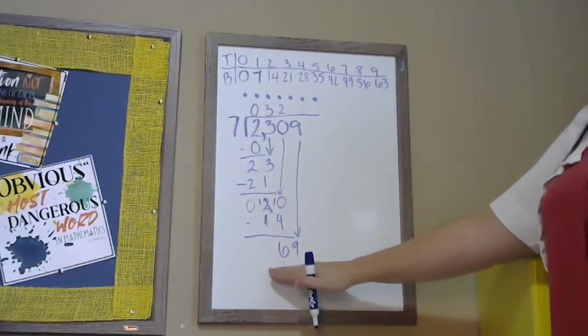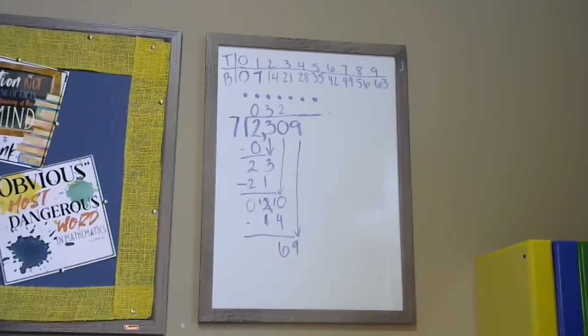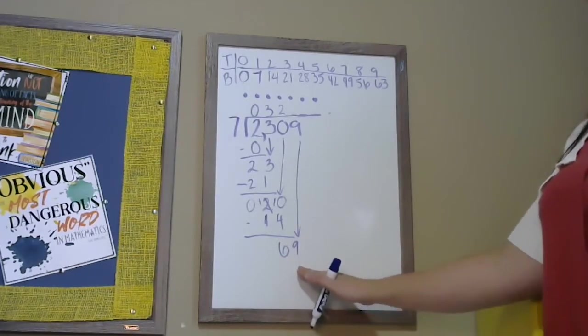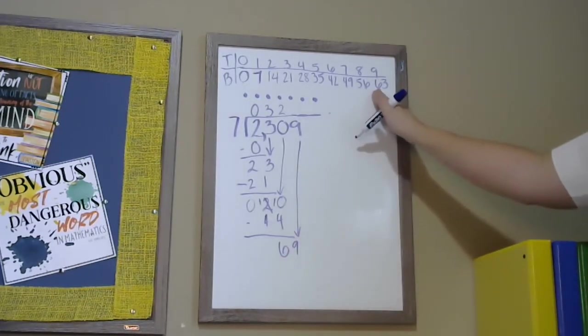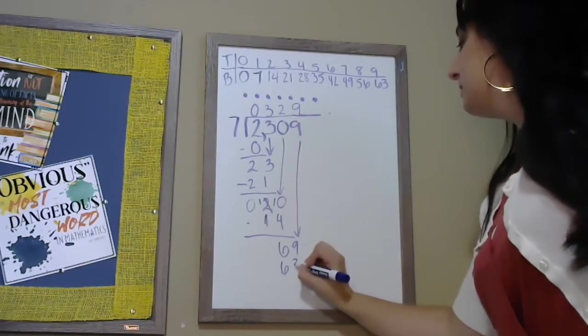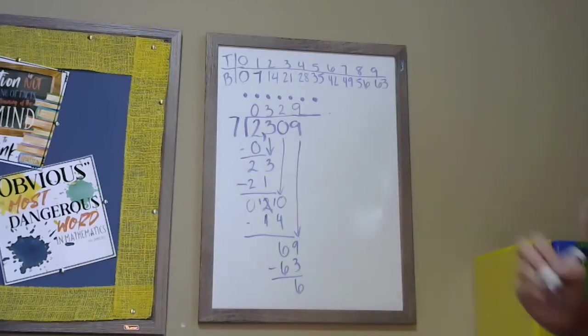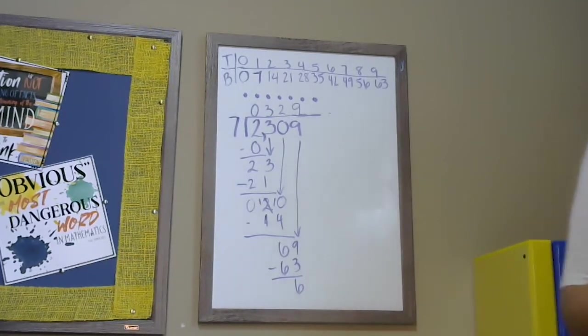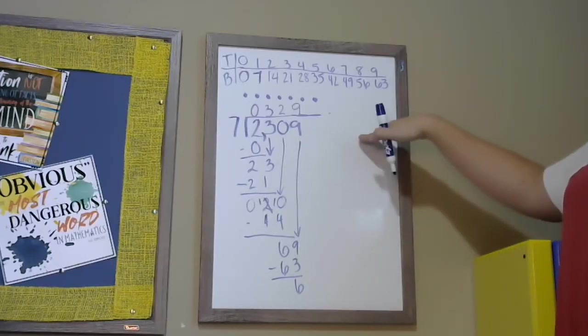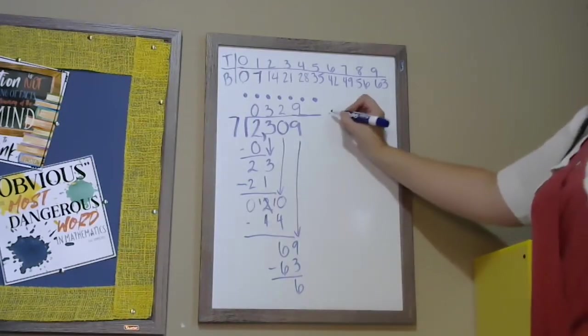Now we have the number 69. Which of these numbers is the largest number I can subtract from 69? It's 63. Tops, bottoms, subtract. I now have nothing to bring down. At this point, I could either have my student add a decimal and zeros or use this number as my remainder.